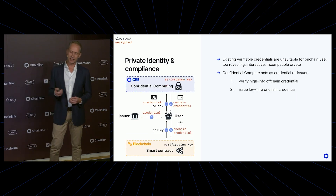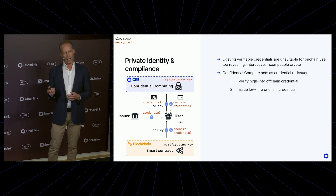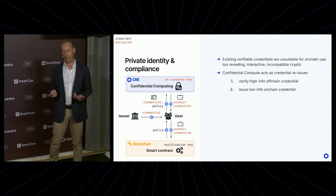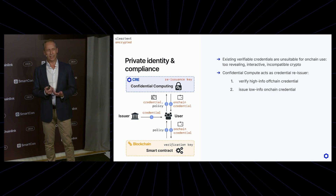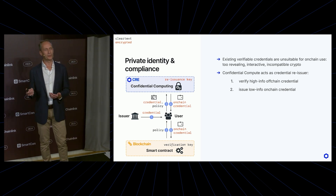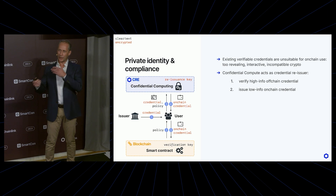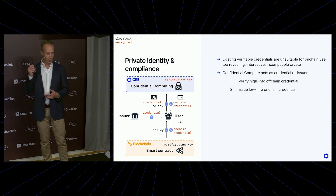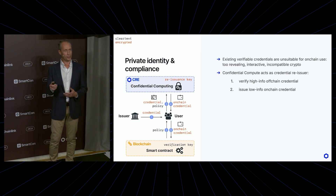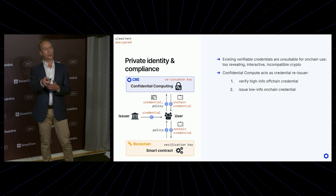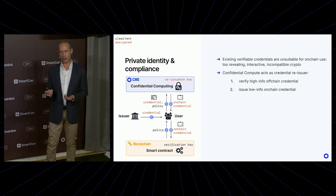A final use case is private identity and compliance. Digital identity is a blocker for many use cases on blockchain because there is no good identity solution there. Digital identity is starting to take off in the Web2 world with verifiable credentials. The only problem is that they are often too revealing in terms of personal information, and the cryptography needed to verify them is often not compatible with your favorite chain. Chainlink Confidential Compute can solve that by letting users show their Web2 credentials to an enclave, so that only inside the enclave are the credential details visible.